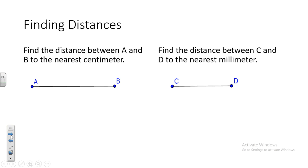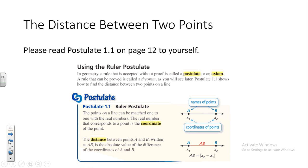So what we're asking you to do is find distances between points. We can do that with rulers and with number lines. The first thing I want you to do at the top of your page is fill out the blank: in geometry, a rule that is accepted without proof is called an axiom or a blank.